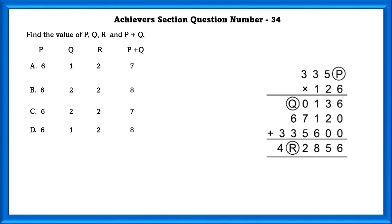Question number 34: Find the value of p, q, r, and p plus q in a multiplication sequence. If we multiply 6 into 1 we get 6, or 6 into 6 gives 36. Checking with 6: the 100th digit of 126 is 1, and 1 into 6 is only 6. In the third column, 1 into 6 is 6. So p has to be 6. Continuing with 6, if we multiply 3, 3, 5, 6 into 6 we get the digits 2, 0, 1, 3, 6.